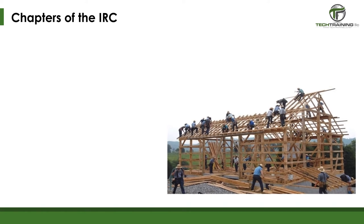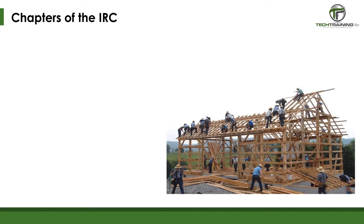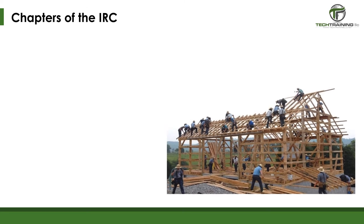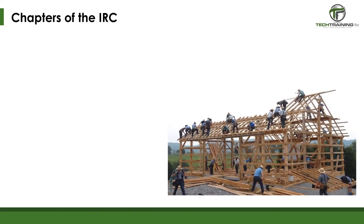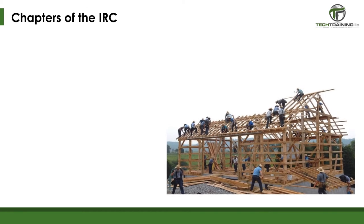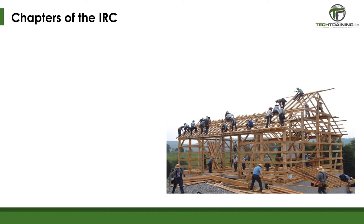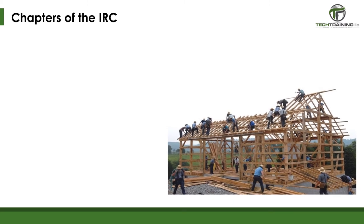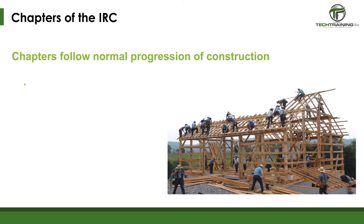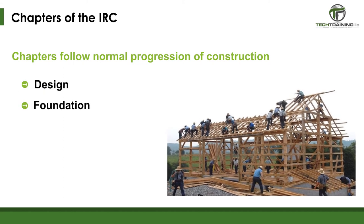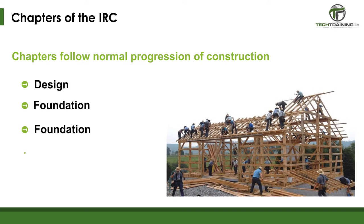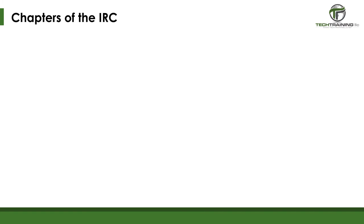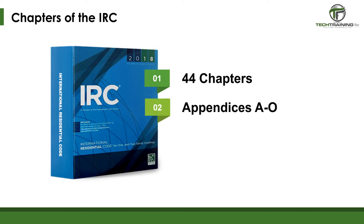It is important to understand that the IRC covers what is considered conventional and common practices in residential construction. It is unique that much of the IRC, including Chapters 3 through 9 as well as Chapters 34 through 43, are laid out in an orderly format consistent with the normal progression of construction — starting with the design phase and continuing through the final trim-out phase. Think of the IRC as a recipe: it tells you exactly what is required for various phases of construction. The IRC consists of 44 chapters and Appendices A through O, further broken down into 9 parts.